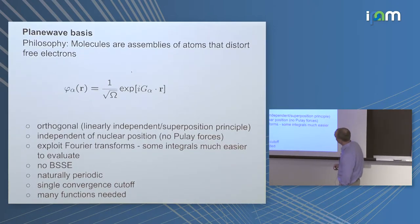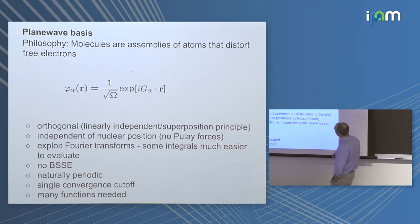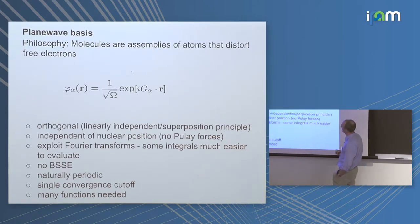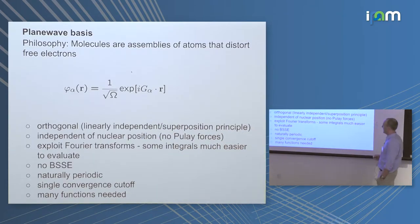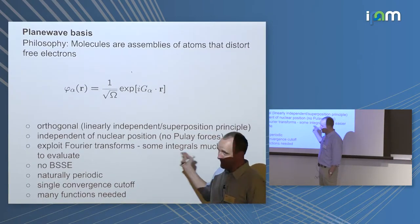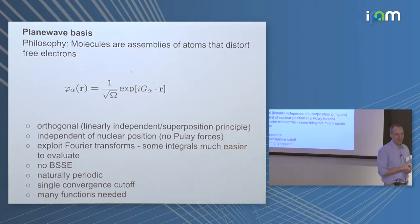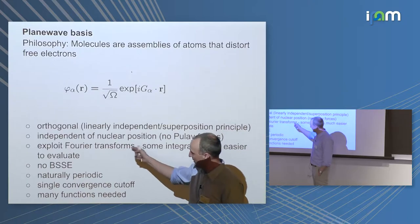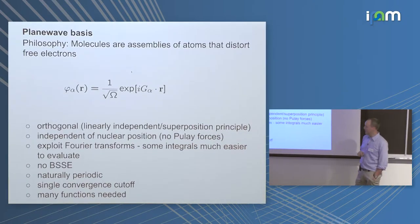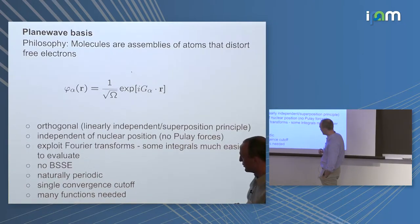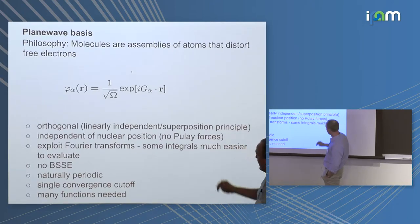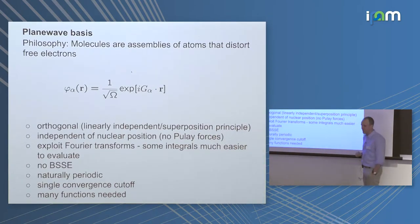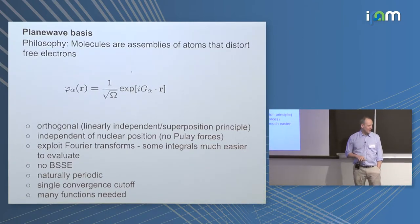Another alternative is a plane wave basis, more similar to the uniform electron gas: assume molecules are assemblies of atoms distorting free electrons. You can exploit Fourier transforms — some integrals needed in quantum mechanics are much cheaper in Fourier space, and you can choose in which space to integrate since Fourier transforms are extremely efficient. Plane waves are independent of nuclear positions and have a single convergence cutoff. The big drawback is you usually need many, many functions — again, no free lunch.